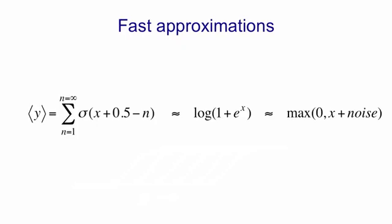So the sum of the activities of a whole bunch of sigmoid units with offset biases, which is what's shown in that summation, is approximately equal to log of 1 plus e to the x.